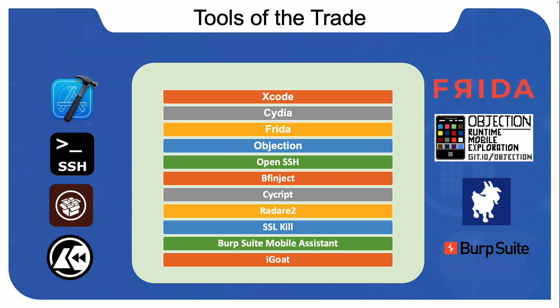Objection is a runtime mobile exploration toolkit powered by Frida. It's built to help you assess the security posture of mobile applications without the need of having them jailbroken. You can inspect and interact with the container file system, bypass SSL pinning, dump keychains, perform memory-related tasks, etc. It's a very powerful tool we'll be using in this course.